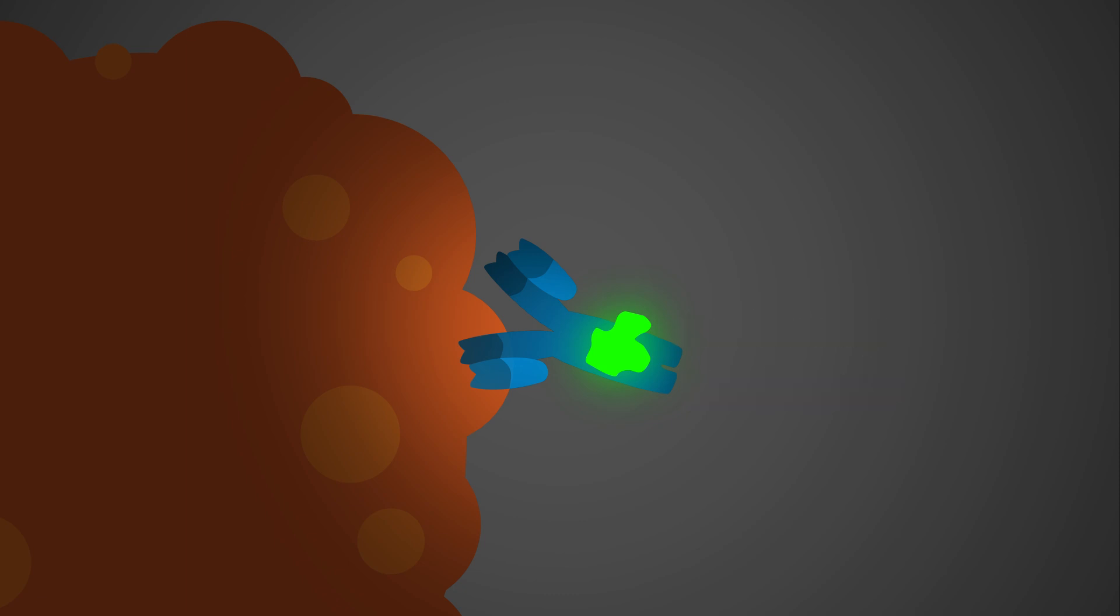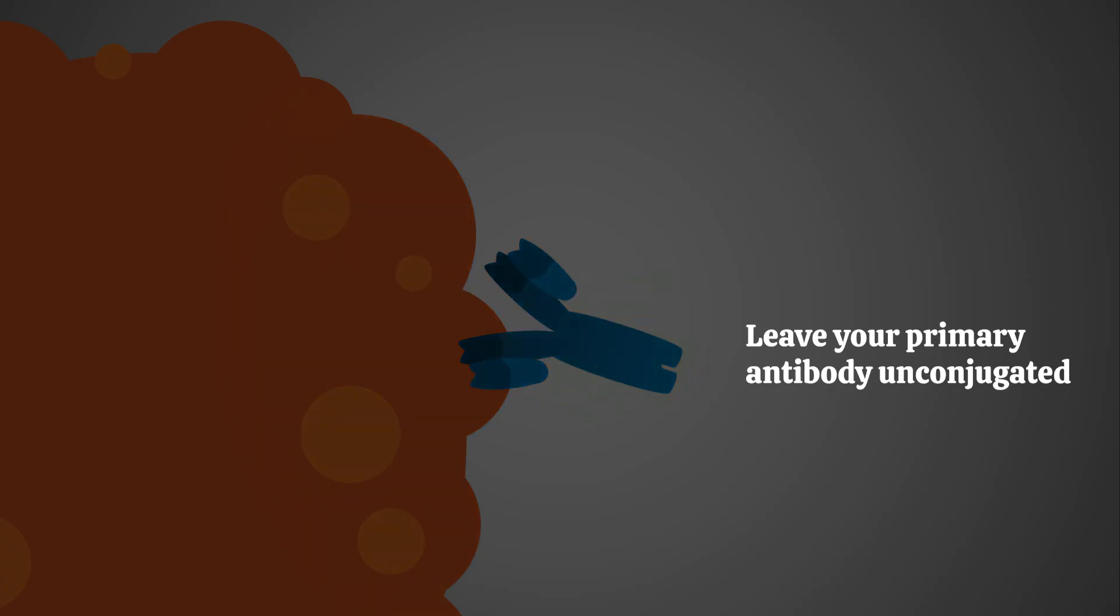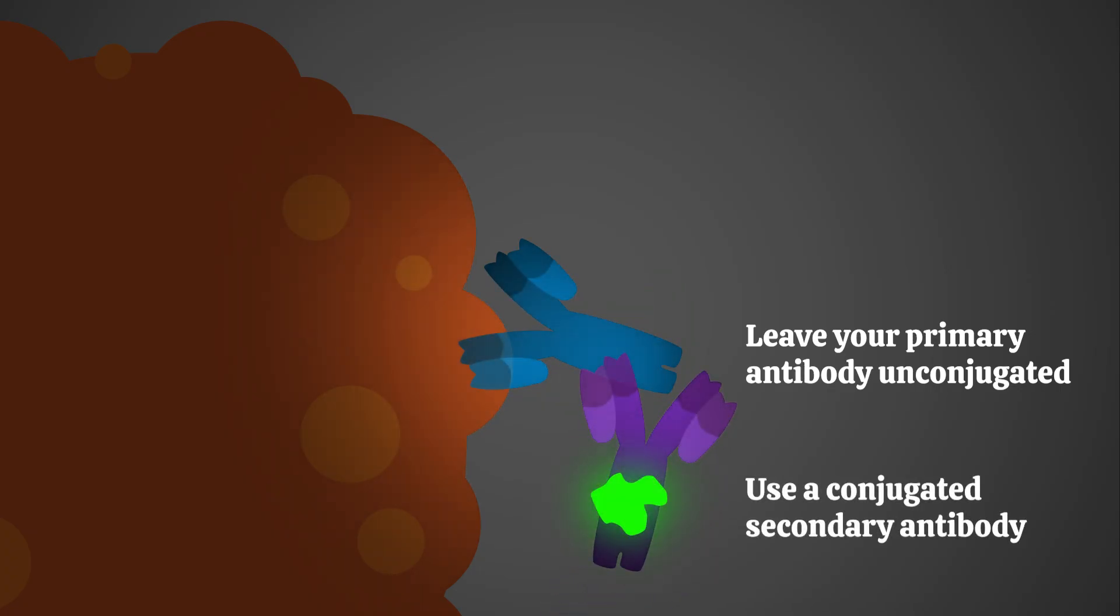You can conjugate your primary antibody, the antibody that binds to your target of interest, for direct detection. Or, if you want to amplify your signal, you can leave your primary antibody unconjugated and use a conjugated secondary antibody instead. This secondary antibody targets the Fc region of your primary antibody. This is called indirect detection.